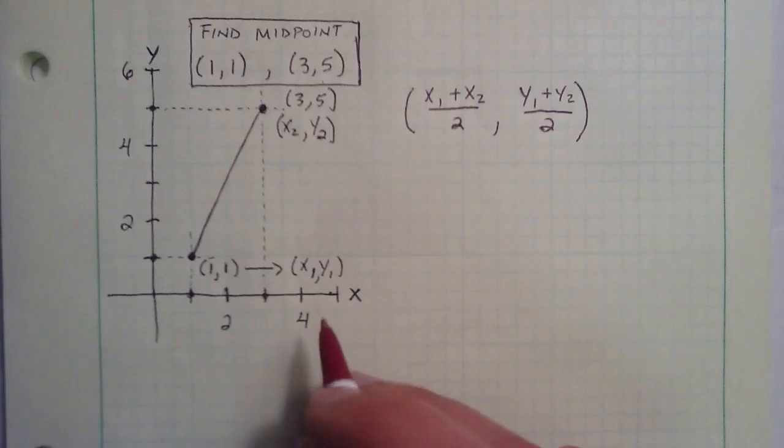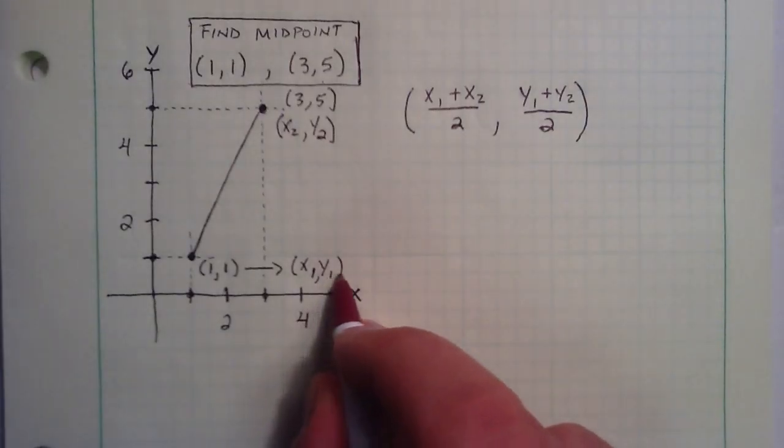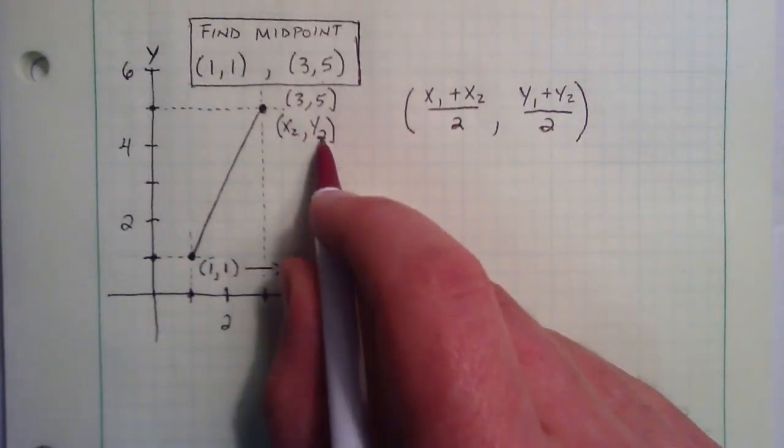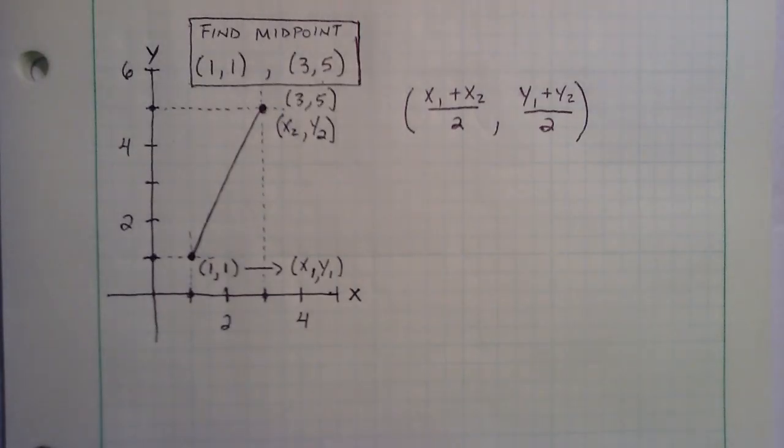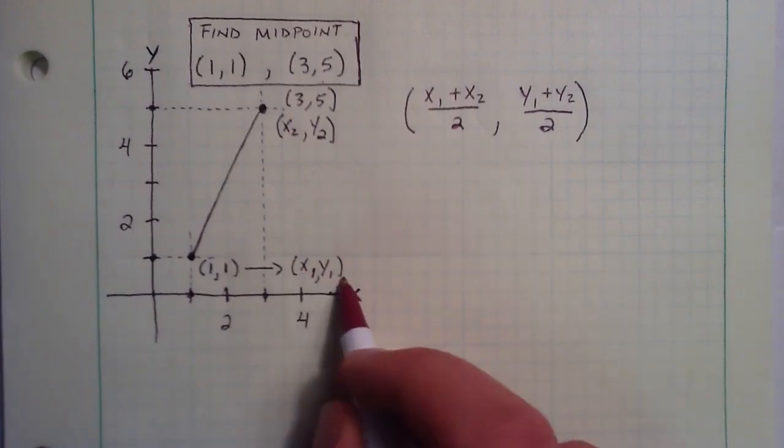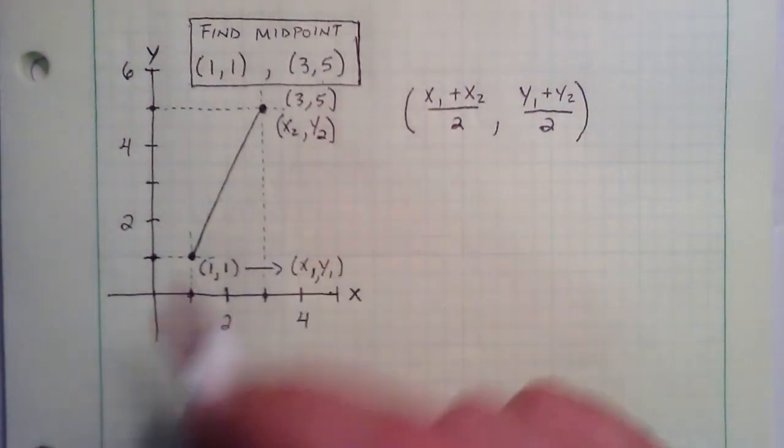So I could have named these ones x2, y2, and these ones x1, y1. And it doesn't really matter which way I do it. The midpoint formula is going to give you the same answer either way. So just take your pick. As long as one of them is both 1's, and the other one is both 2's, you'll do fine.